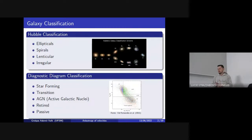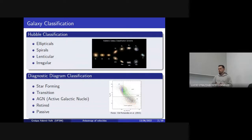Galaxies are formed by dust, stars, gas, and dark matter. There are a large number of galaxies in the universe with many properties and shapes. But to facilitate our work, we tend to classify galaxies in categories. Here I show two galaxy classifications: the Hubble classification, where we classify galaxies with respect to their morphology, and the diagnostic diagram classification, where we classify galaxies with respect to the main agent responsible for the ionization of the gas in the galaxies.